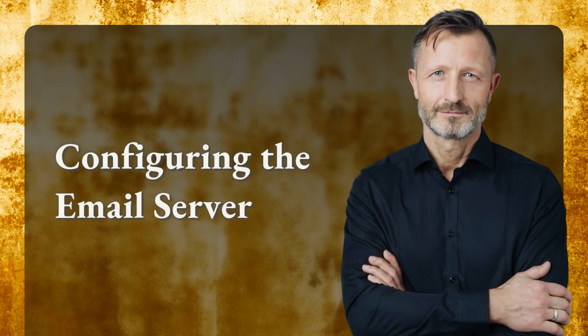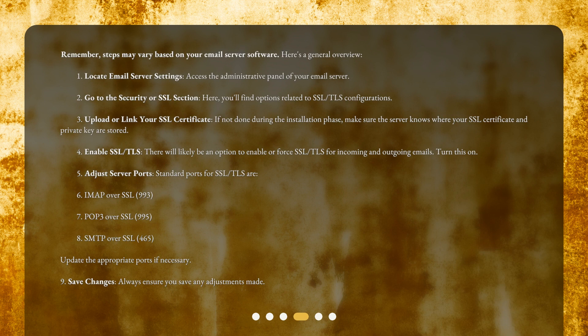Configuring the email server. Note that steps may vary based on your email server software. Here's a general overview. First, locate your email server settings by accessing the administrative panel of your email server. Then go to the Security or SSL section, where you'll find options related to SSL and TLS configurations.